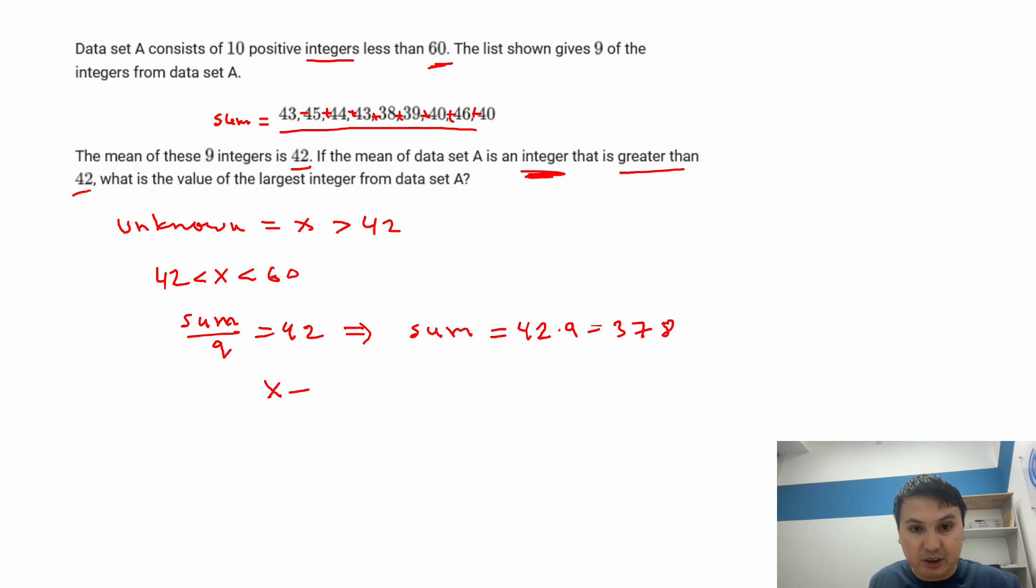So now, if I add x to them, and then take the average - means divide by it - so this must be an integer. And we know that it's bigger than 42.